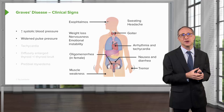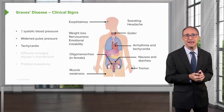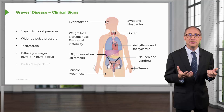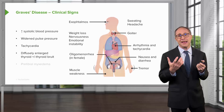Patients also manifest clinically with tachycardias. These tachycardias may be regular or irregular. If they're irregular, they're called atrial fibrillation. There's also a diffusely enlarged thyroid and occasionally a thyroid bruit, which is the abnormal sound that the blood vessels of the thyroid make as blood flows through them rapidly.